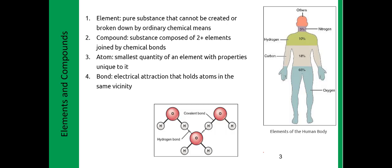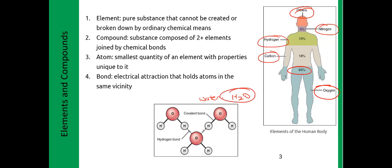Starting with definitions: an element, compound, atom, and bond. As shown in the diagram on the right, the common elements of the human body include oxygen, which makes up 65% of all elements, carbon, hydrogen, nitrogen, and a host of others. A compound is a substance composed of two or more elements joined by chemical bonds. Water (H2O) is a compound of two hydrogens and one oxygen, joined together by covalent bonds.